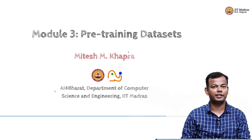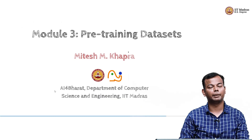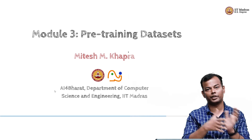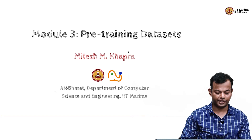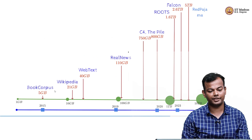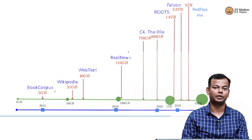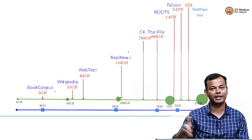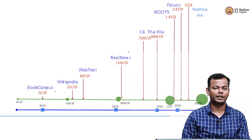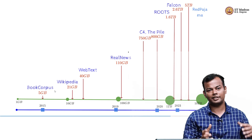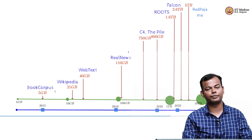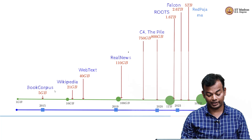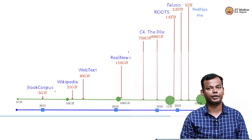Now, as we have seen the pipeline for creating pre-training datasets, let us look at what are the datasets that have come out through such pipelines. We had already looked at this graph earlier, where as time goes by more and more datasets are coming out. They all start from Common Crawl or some such web crawl and then refine it and grow larger over a period of time.